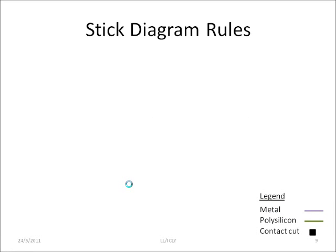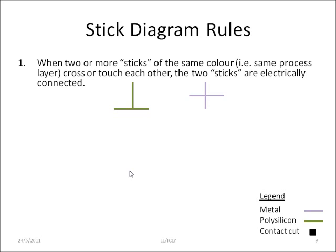Some rules that you follow should help you draw the stick diagram. When two or more sticks of the same color, meaning it belongs to the same process layer, touch or cross each other, the two sticks are electrically connected. For example, here you see polysilicon which is green. These two polysilicon sticks are touching each other, so these two sticks are electrically connected. Here you see the metal lines crossing each other. Because they are of the same layer, there is electrical contact.